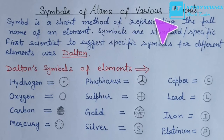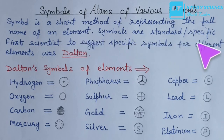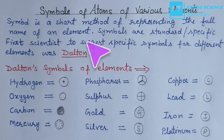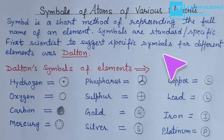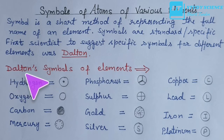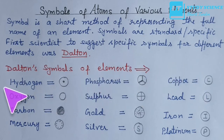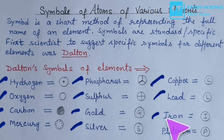Now, symbols of atoms of various elements. A symbol is a short method of representing the full name of an element. Symbols are standard and specific. The first scientist to suggest specific symbols for different elements was Dalton. Dalton gave symbols for hydrogen, oxygen, carbon, mercury, phosphorus, sulfur, gold, silver, copper, lead, iron, and platinum — but these symbols were difficult to remember and could not be used in chemical reactions, so they were not accepted.